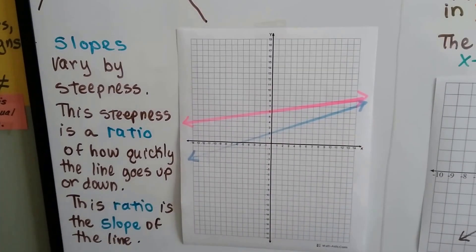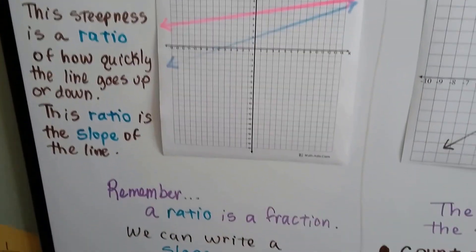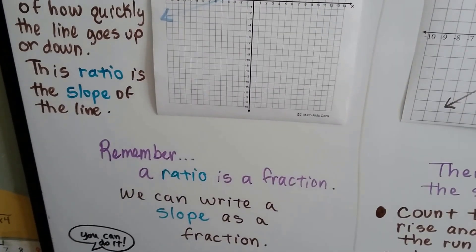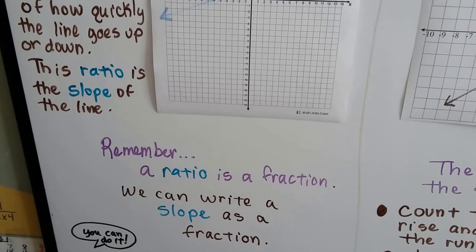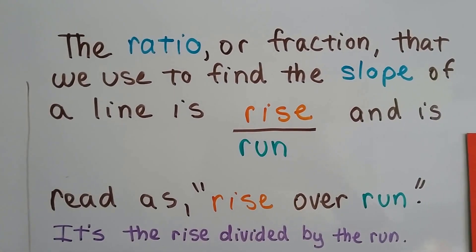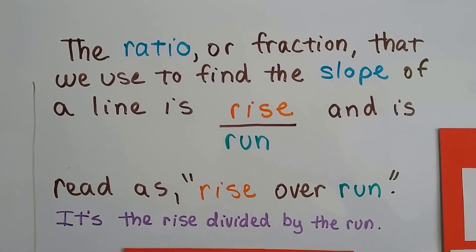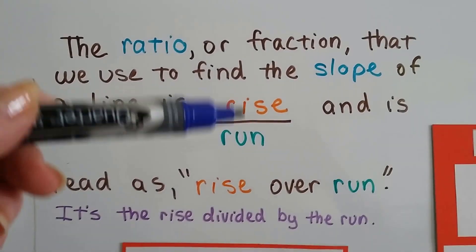Well, the ratio is the slope of the line. And remember, a ratio is a fraction. And we can write a slope as a fraction. The ratio or fraction that we use to find the slope of a line is the rise on top of the run as a fraction.